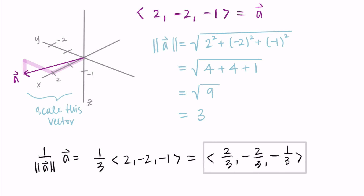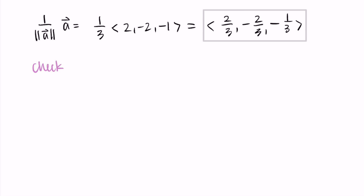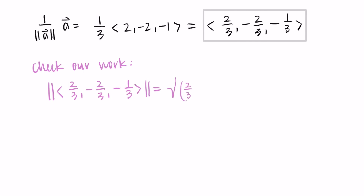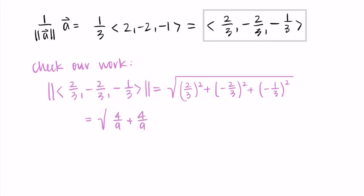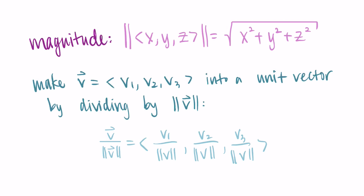If you're not totally confident, you can always check your work. Let's find the magnitude of our new vector ⟨2/3, −2/3, −1/3⟩: square each component and add them — (2/3)² + (−2/3)² + (−1/3)² = 4/9 + 4/9 + 1/9 = 9/9 = 1, and √1 = 1. This vector is a unit vector with length 1 pointing in the direction we wanted. To summarize: for unit vectors, divide each component by the current length, and the magnitude formula is just the distance formula in however many dimensions you're working with.